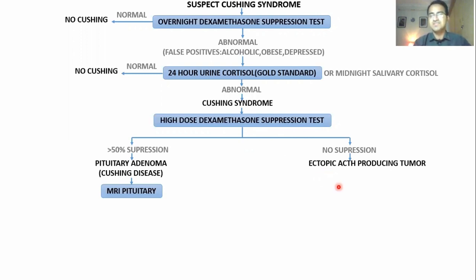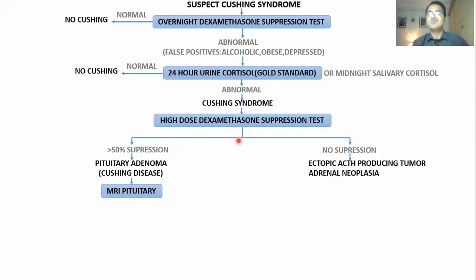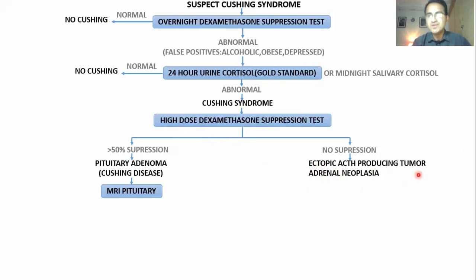If there is no suppression, this could be ectopic ACTH secretion or adrenal neoplasia directly producing cortisol — and that excess cortisol is not suppressed by high-dose dexamethasone. You then need to differentiate whether this is adrenal neoplasia producing excess cortisol, or an ectopic ACTH-producing tumor stimulating the adrenal gland.